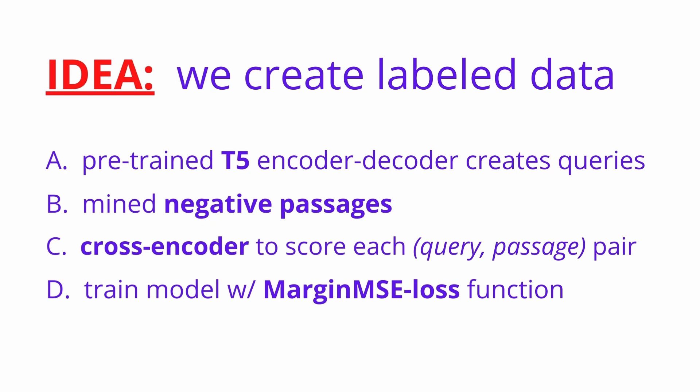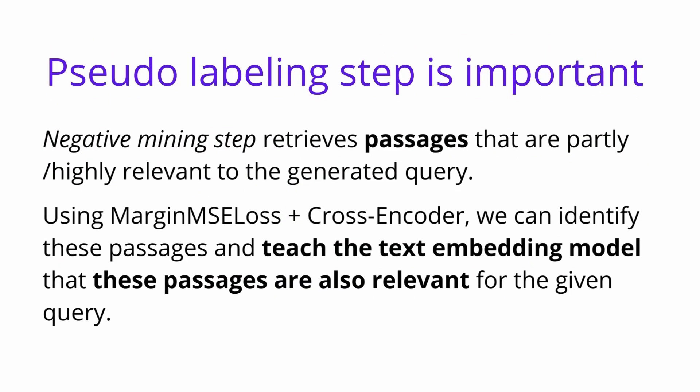Step B is an important step: we mine some negative passages — specifically hard negative passages. Step C: we apply a cross encoder (not a bi-encoder, because it has better performance) to score each query-passage pair. For each query generated by our Google T5 text-to-text model, we have a text passage forming a pair, and then we train a model with a very specific loss function.